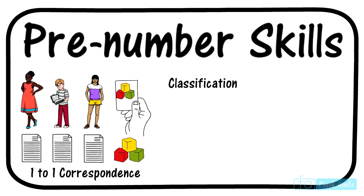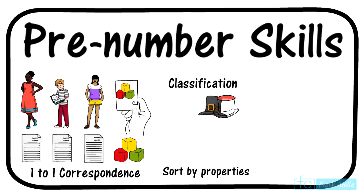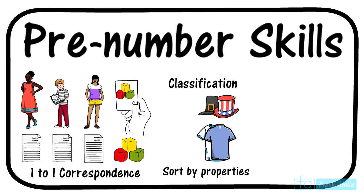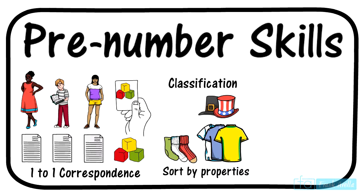Next is classification, which is essentially the ability for students to sort objects and ideas. For example, think variables for different objects: X can represent the number of hats, Y the number of shirts, Z the number of socks. Students should be able to classify the socks and put them in a 'sock basket.'